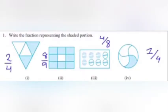See question number 1: Write the fraction representing the shaded portion. Figure first - here total number 4 and 2 parts shaded, so you will write 2 by 4. Figure number second - total number 9, 8 parts shaded, so you will write 8 upon 9.